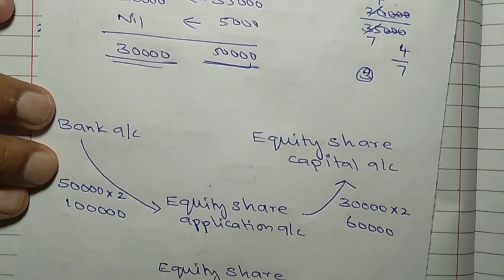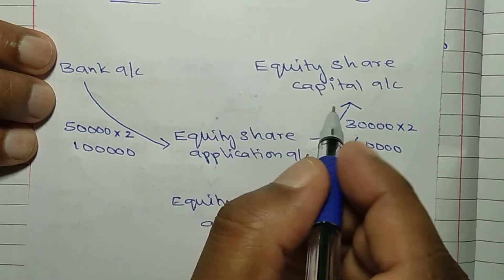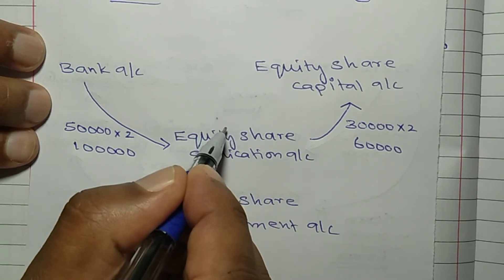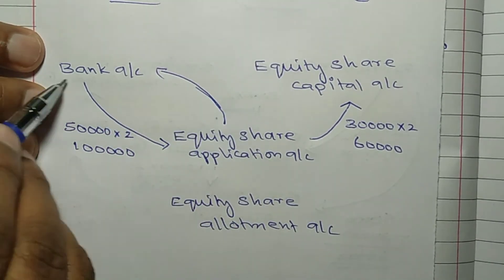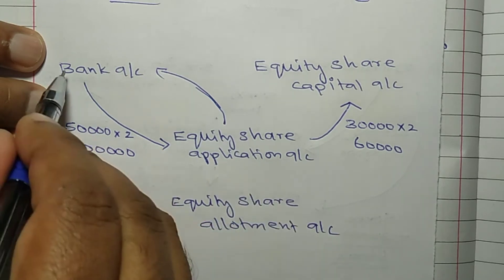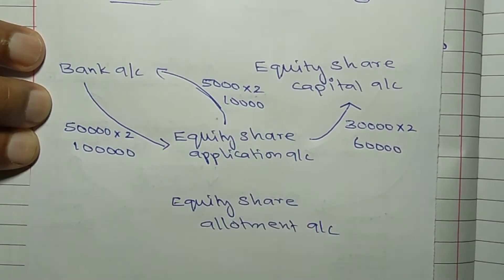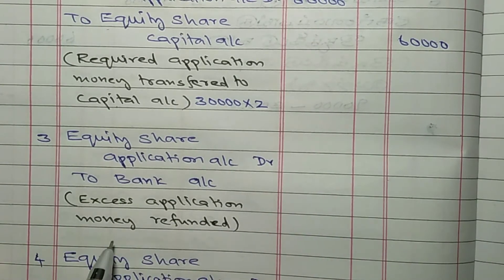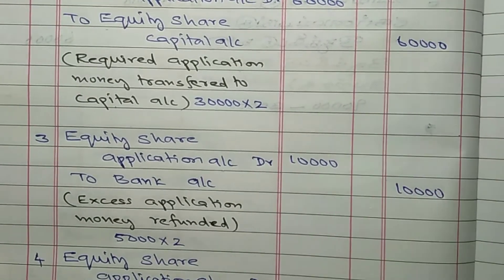Next, excess application money. 5,000 shares are rejected and money is refunded — that is the reverse entry. Equity share application account debit to bank account. How much refunded? 5,000 shares into Rs 2 equals Rs 10,000. Equity share application account debit Rs 10,000 to bank account credit Rs 10,000. Excess application money refunded.